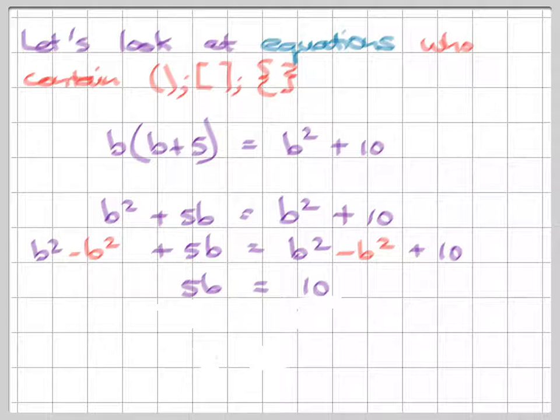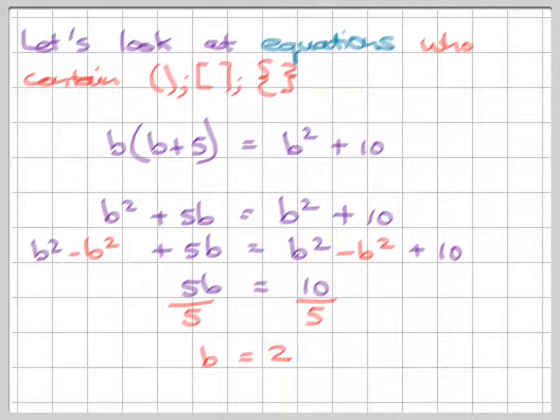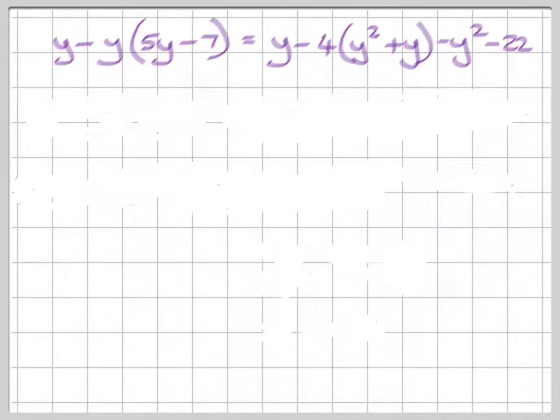Now we need to isolate the b of it by dividing by 5. We do the inverse. We're going to divide by 5 on this side and on the other side of the equal sign. And we end up with b = 2. Now, you can see now how we sort out symbols of inclusion in algebra.